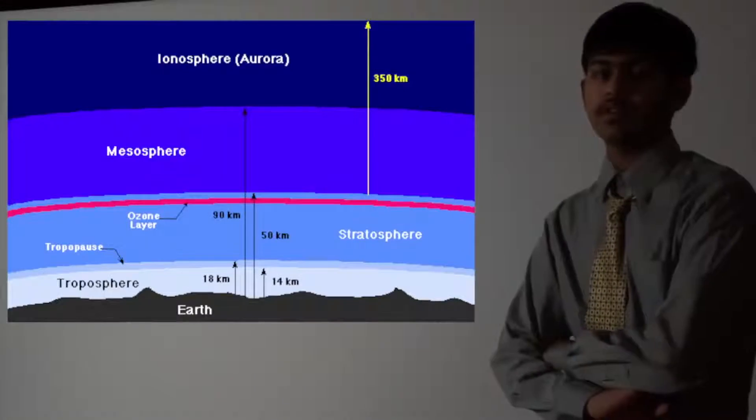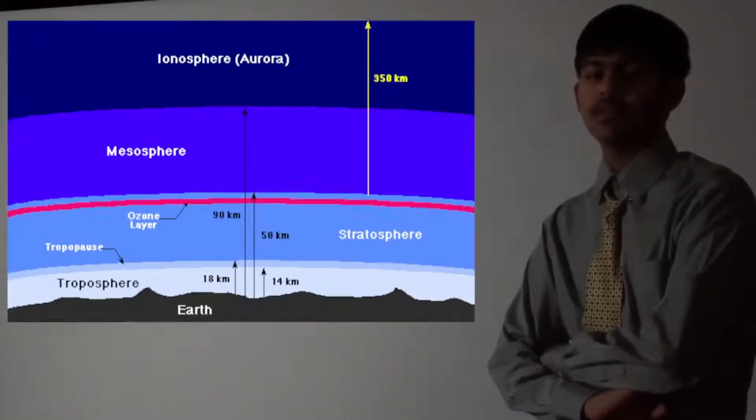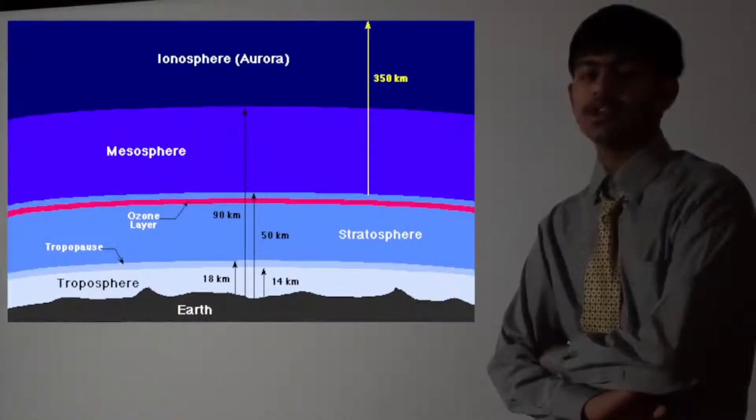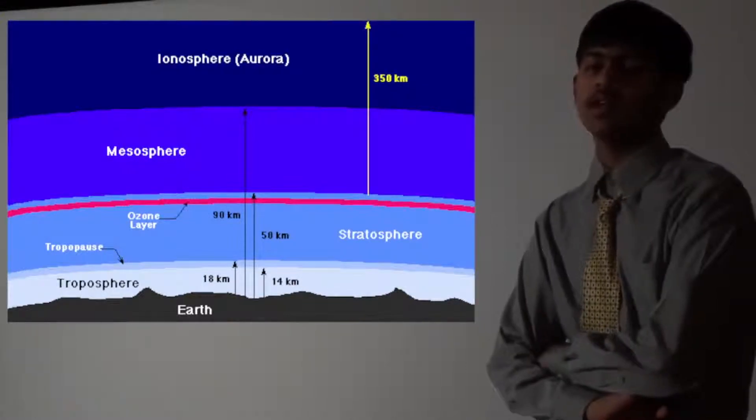The mixture of gases surrounding and protecting the Earth is the atmosphere. There is about 78% of nitrogen and 21% of oxygen.